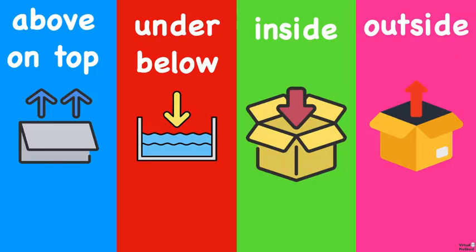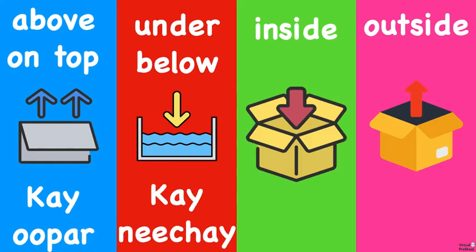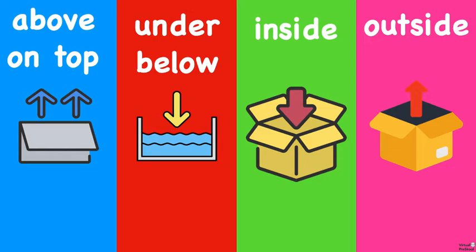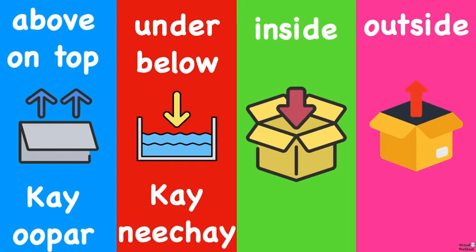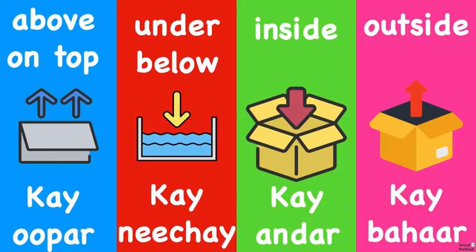So let's review this one more time. Above or on top is ke upar. Under and below is ke neiche. Inside of is ke under. And outside of is ke bahar. One more time: above or on top is ke upar, under or below is ke neiche, inside of is ke under, and outside of is ke bahar.